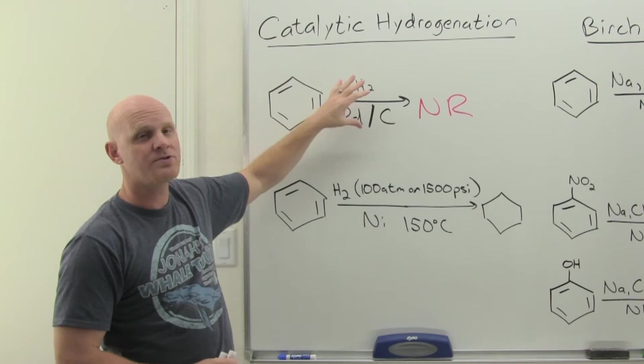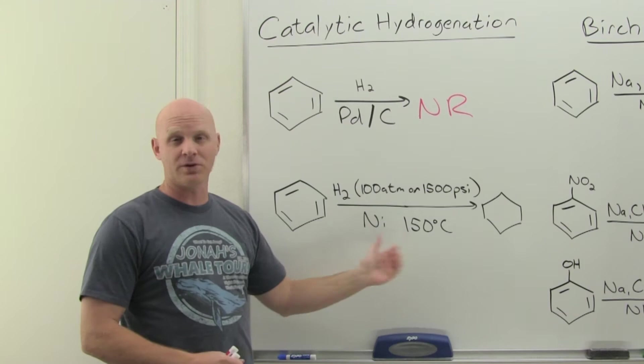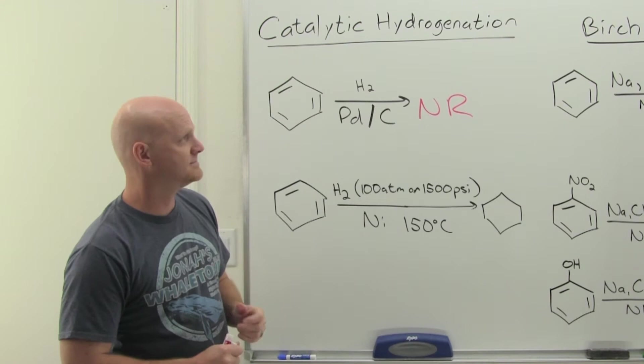And most textbooks make kind of a note of this distinction here. So if you do the normal catalytic hydrogenation with benzene, nothing. But harsh conditions, 100 atmospheres, 1500 PSI, 150 degrees Celsius. That's when you can get full reduction of all the pi electrons down to cyclohexane.